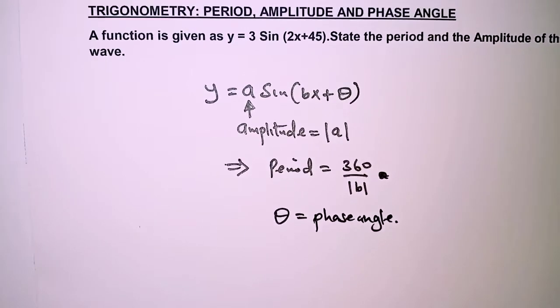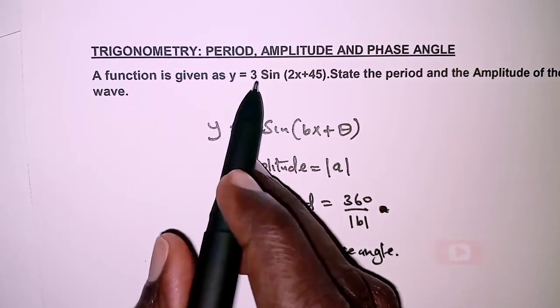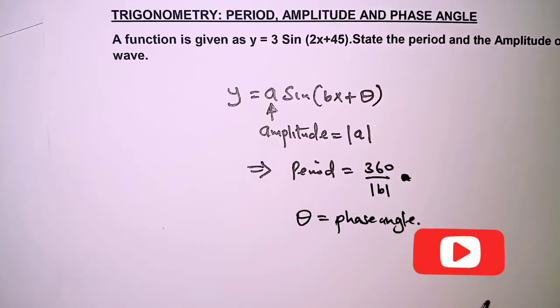Okay, with that we can now embark on the equation. We have y = 3 sin(2x + 45).